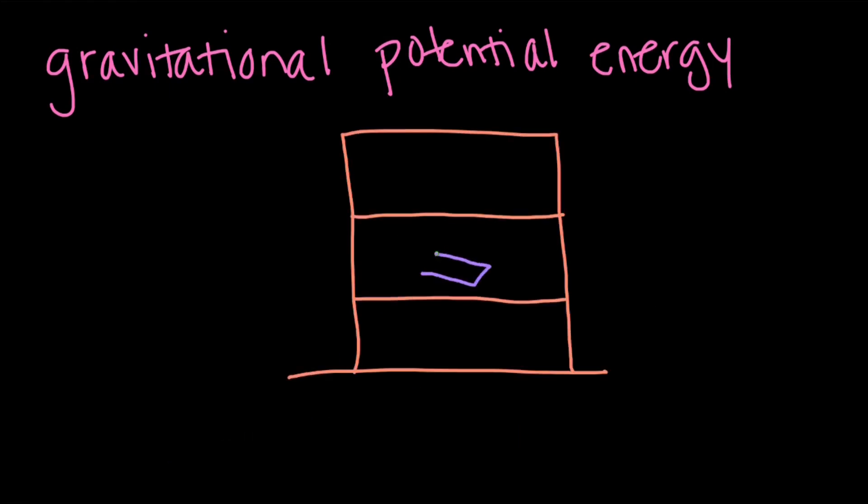Consider a book on a bookshelf. If the book is on this shelf, we can use this shelf as the zero for potential energy. Moving it to a higher shelf would mean it has gravitational potential energy relative to that lower shelf, or relative to the floor if we want to use that as our comparison instead.